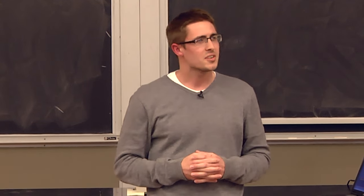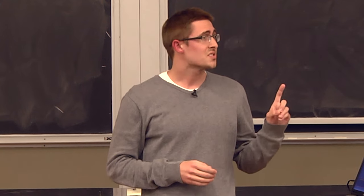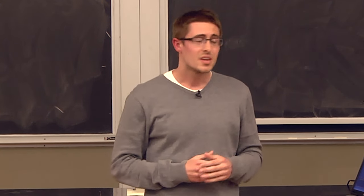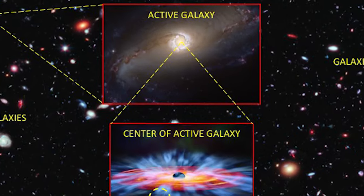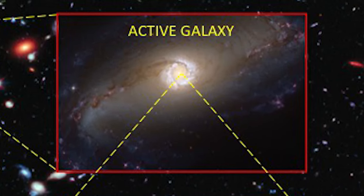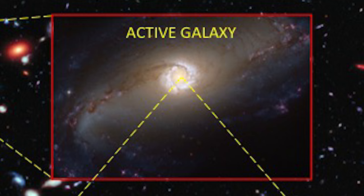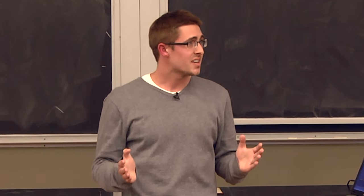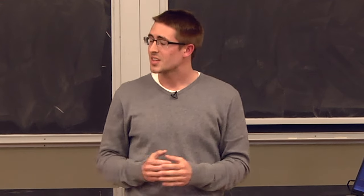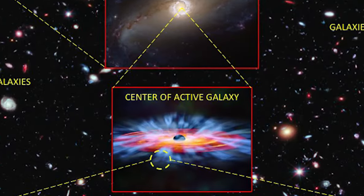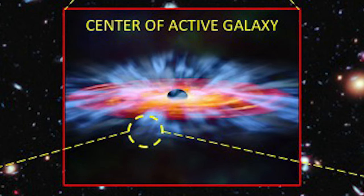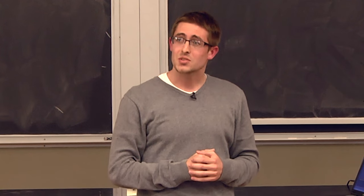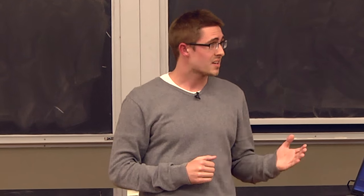How does a galaxy change its appearance? One way a galaxy changes is by going through an active phase. Here is a picture of an active galaxy and you can see a bright light in the center. This light has about the same brightness as 100 billion suns. In the middle is a black hole. The orange gas falling toward the black hole, just like things fall toward the earth, produces the bright light in the centers of active galaxies.